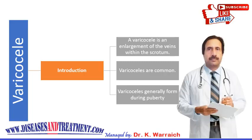Varicocele only occurs in the scrotum and is very similar to the varicose veins that can occur in the legs. Varicocele can result in decreased sperm production and quality, which in some cases may lead to male infertility. It can also cause the testicles to shrink.